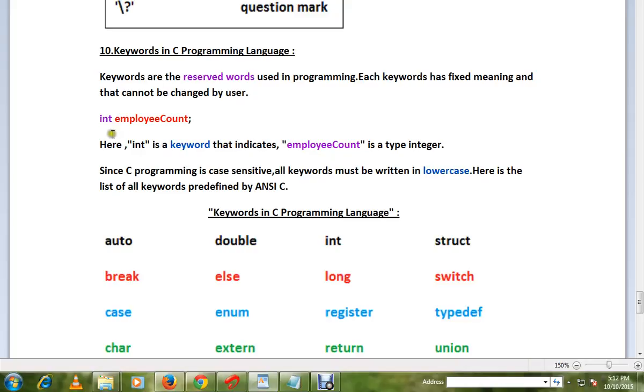For example, int employeeCount - here, int is a keyword that indicates employeeCount is of type integer. Since C programming is case-sensitive, all keywords must be written in lowercase. Here is the list of keywords predefined by ANSI C.